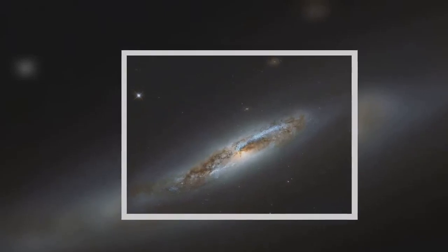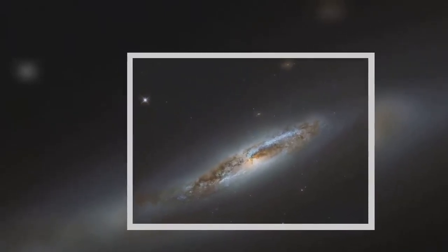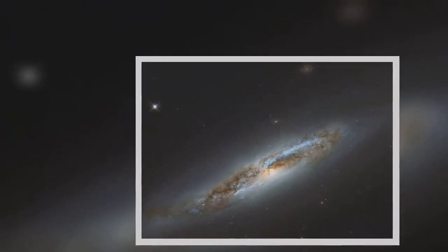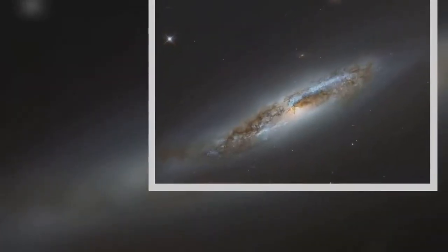Where the habitable zone is depends on the star itself. Red dwarfs are dimmer and therefore cooler than the Sun, so their habitable zones are shifted closer in than the equivalent zone in our solar system.